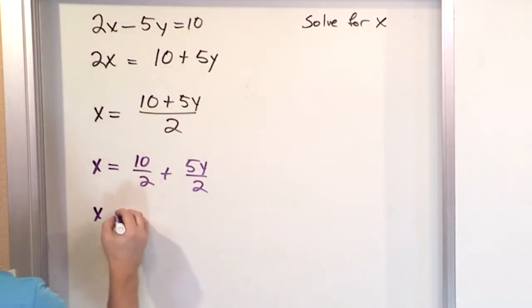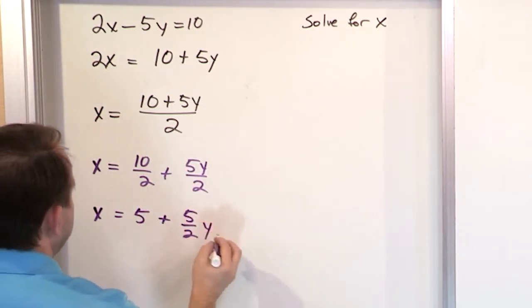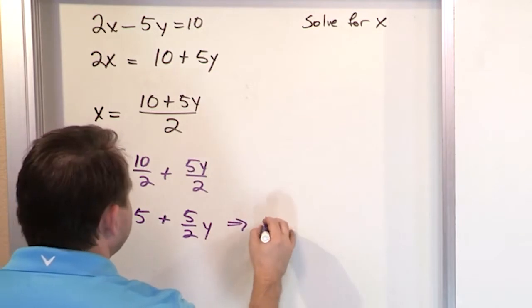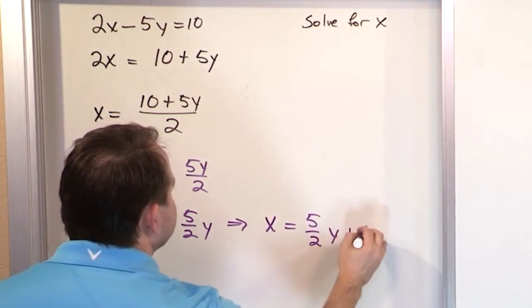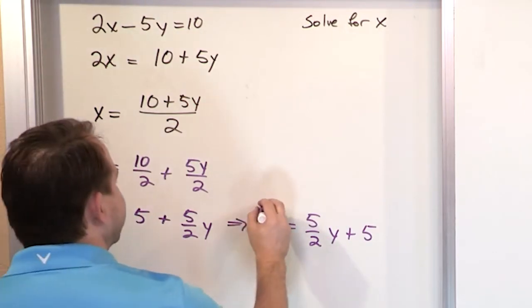So now what you have is 10 divided by 2 is 5. 5 divided by 2 you can't really do anything about. 5 halves y. Or typically you'll write the variable first, so you'll say 5 halves y plus 5. That's the final answer.